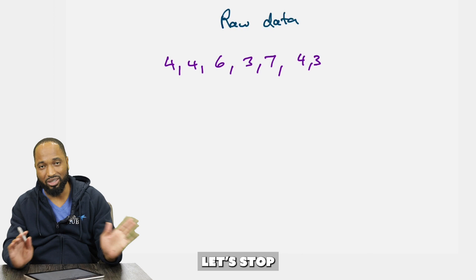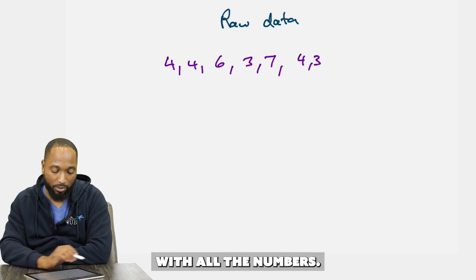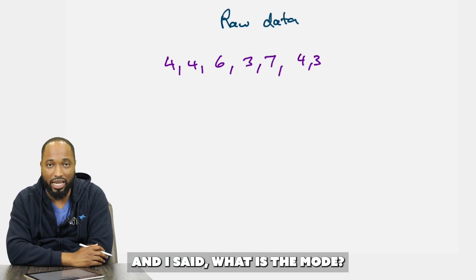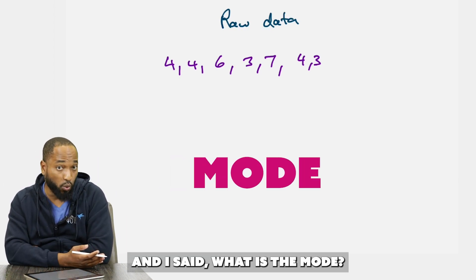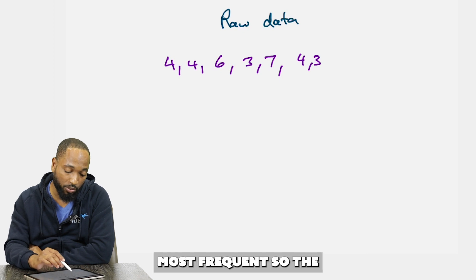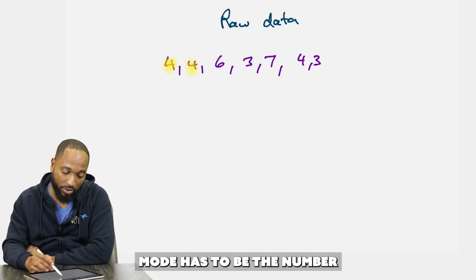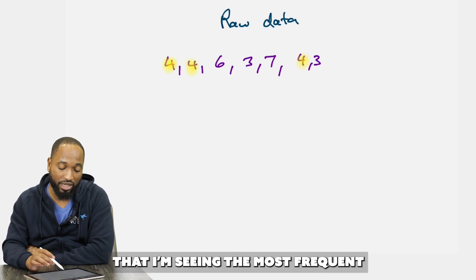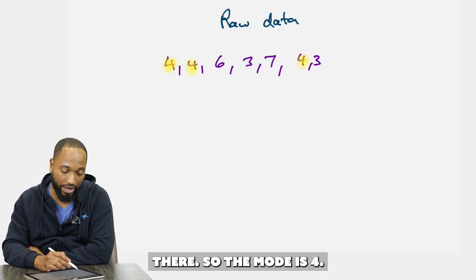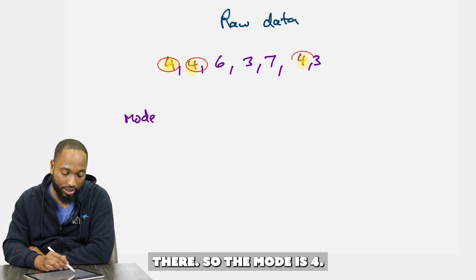Mode means most frequent, so the mode is the number I'm seeing most often. The mode is 4.